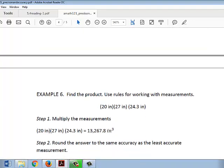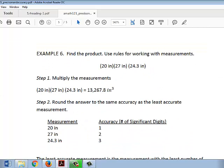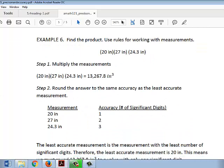So here, we do the easy part first and multiply three measurements together to get this very large number. The tricky part is step two, where we have to round the answer to the same accuracy as the least accurate measurement. So like the previous example, we will look at the accuracy of each measurement.